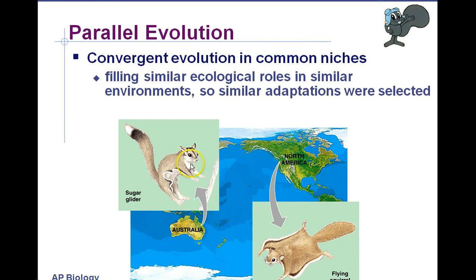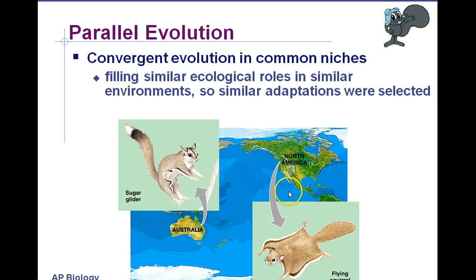Here we have the sugar glider — that's a marsupial mammal. Marsupials have a pouch; think kangaroos. Placental mammals did not evolve in Australia; there are no native placental mammals. In North America, we have flying squirrels, which are placental mammals — animals with an umbilical cord and a uterus where development takes place with a placenta. So with parallel evolution, we have similar analogous structures: skin forming between the forelimbs and rear legs of marsupial sugar gliders, and the same thing in flying squirrels.